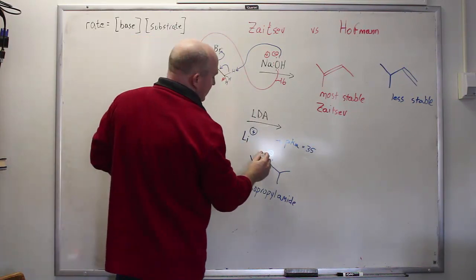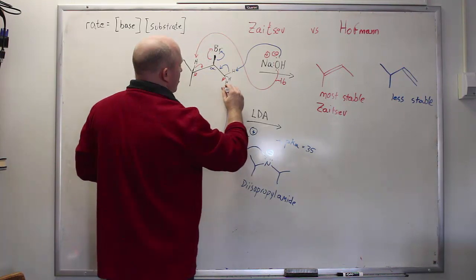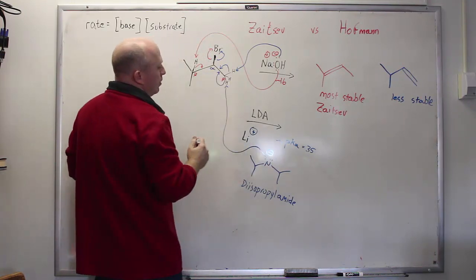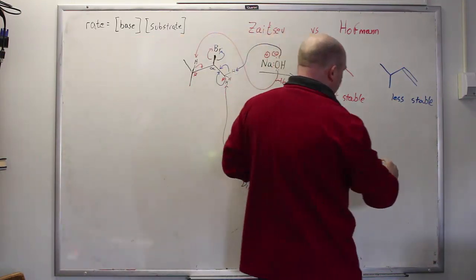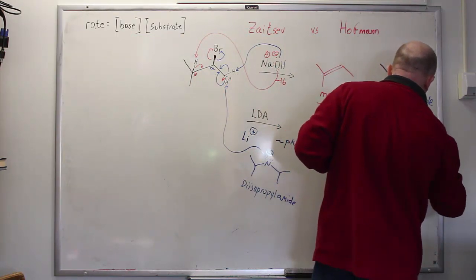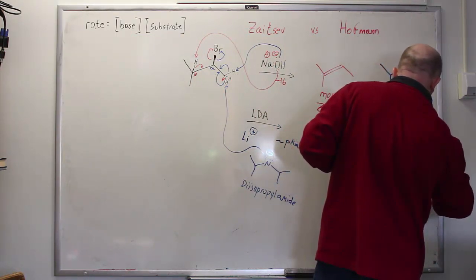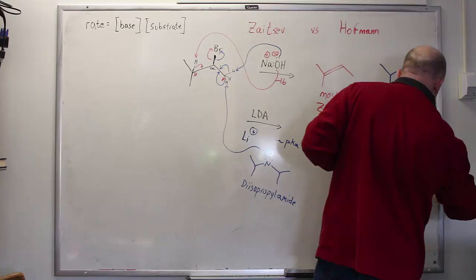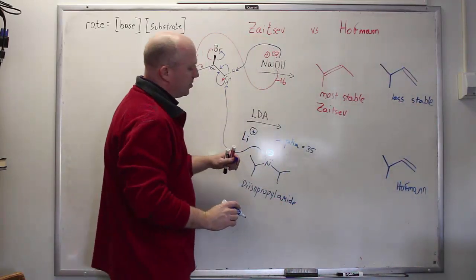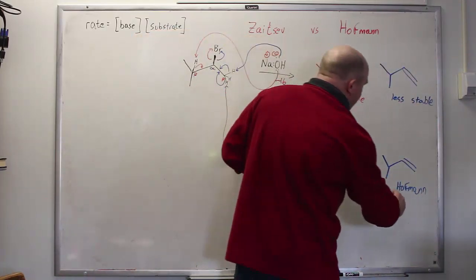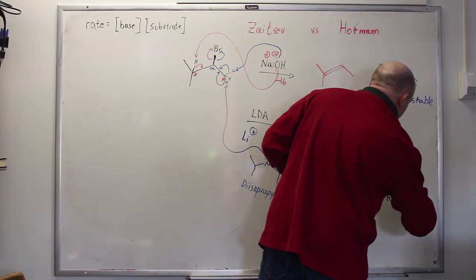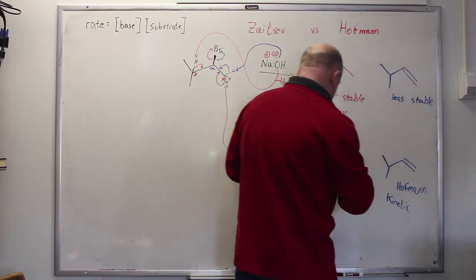Said another way, this is going to exert a very strong kinetic preference for the blue hydrogens. If you use LDA, you're almost certainly going to form what we call the Hoffman product, which is the less stable product. But because of the size and strength of this base, this is going to be the kinetic product. This is going to be the product that forms fastest by far.